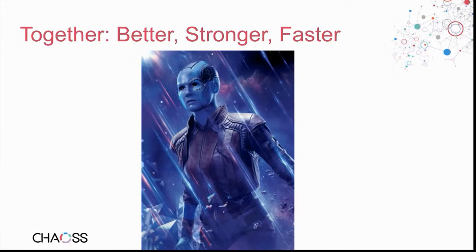That 'better, stronger, faster' framing comes from the TV show The Six Million Dollar Man, where a person was assembled and improved through bionics. We can do this together — figure out what community health is and how to understand it so that we all can be better, stronger, faster. Let's start with 'together.'